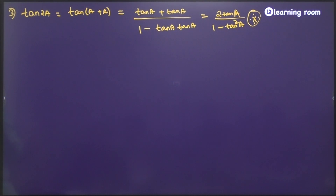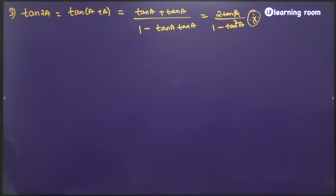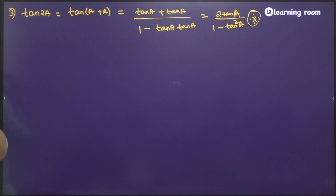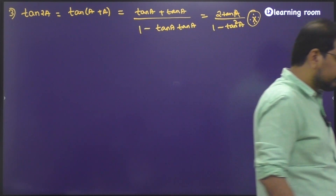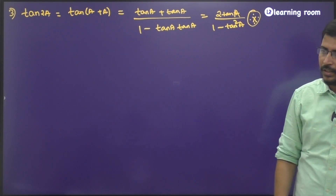Cot 2a generally we do not apply as a formula. If cot 2a is needed, find tan 2a and take the reciprocal. If you recall cot of a plus b, it is cot a into cot b minus 1 by cot b plus cot a. Replace b with a, and you get cot square a minus 1 by 2 cot a. That is cot 2a, but this is not considered as a standard identity. Only the three we covered — sin 2a, cos 2a, tan 2a — are taken into consideration.